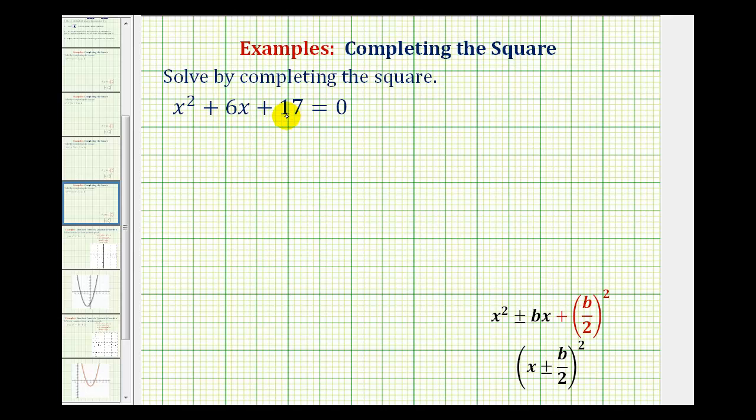The first step here is to move the constant term to the right side of the equation. So I'll have to subtract 17 on both sides of the equation. We would have x squared plus 6x. Now we're going to make this a perfect square trinomial by adding a constant here. So I'm going to leave a space for the constant.